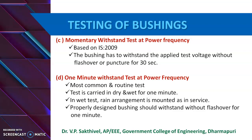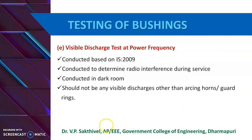The next test is the one minute withstand test at power frequency. This is the most common and routine test used for all electrical apparatus, covering both one minute wet and dry voltage withstand tests. In the wet test, the voltage specified is applied to the bushing mounted as in service with a rain arrangement. A properly designed bushing should withstand the voltage without flashover for one minute. However, this test does not give complete information for satisfactory performance in service, whereas impulse and partial discharge tests give more correct information.